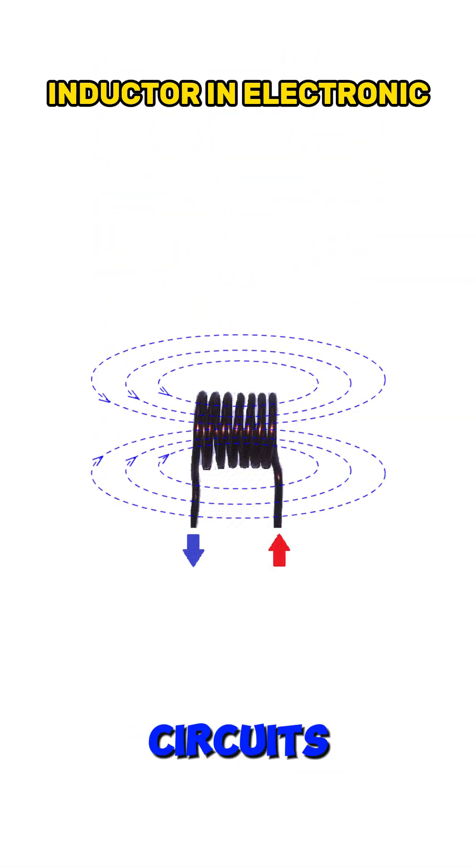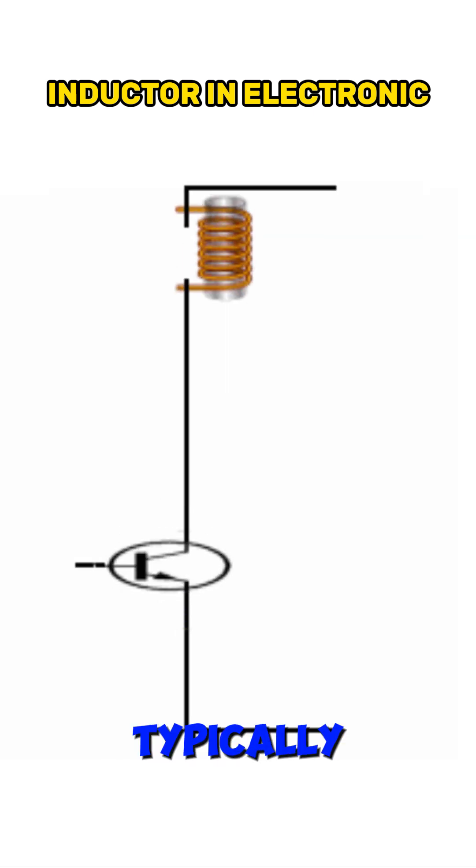Inductors are often used in circuits to block AC while allowing DC to pass or to filter signals. An inductor is typically made of a coil of wire wrapped around a core, which can be air or a ferromagnetic material.